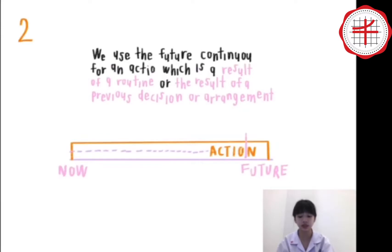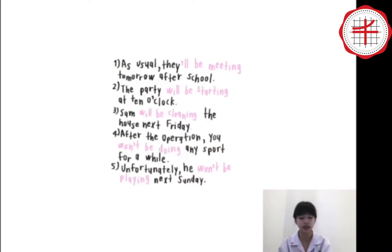Second, we use the Future Continuous for an action which is the result of routine or a previous decision or arrangement. For example, as usual, they will be meeting tomorrow after school. The party will be starting at 10 o'clock. Sam will be cleaning the house next Friday. After the operation, we won't be doing any sport for a while. Unfortunately, he won't be playing next Sunday.